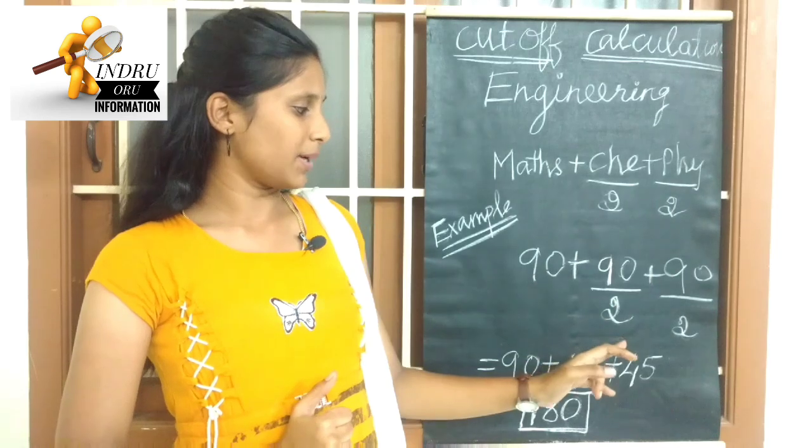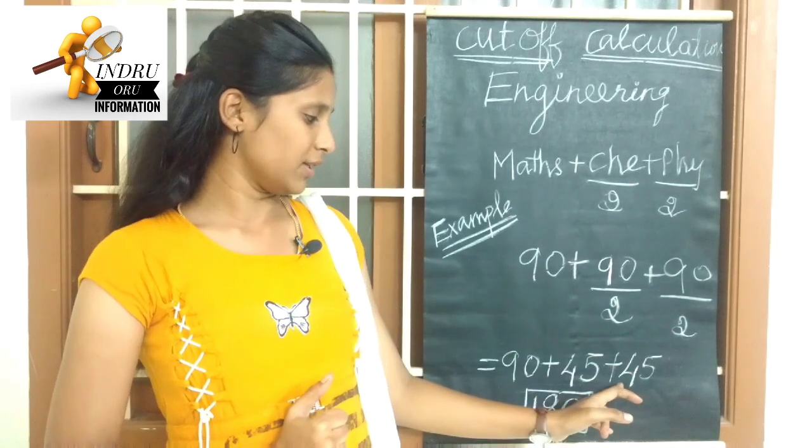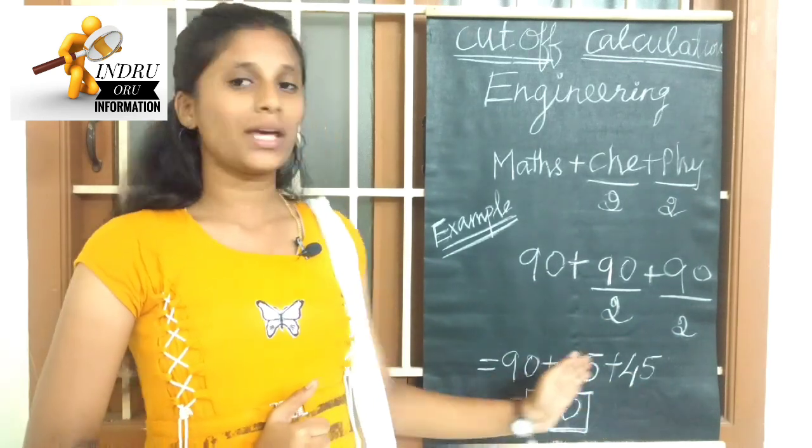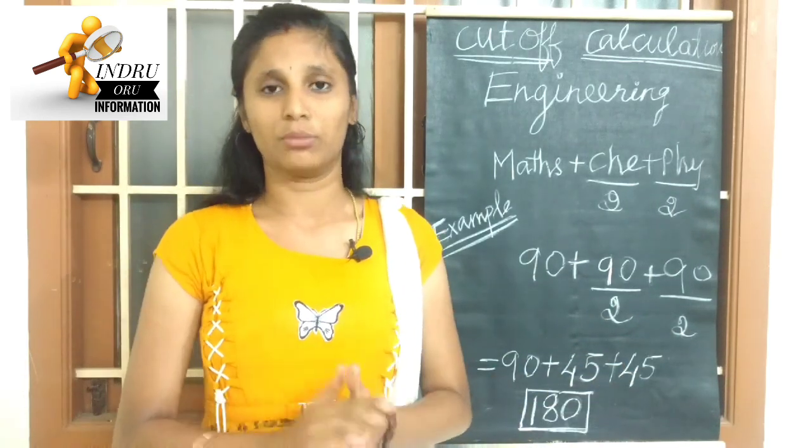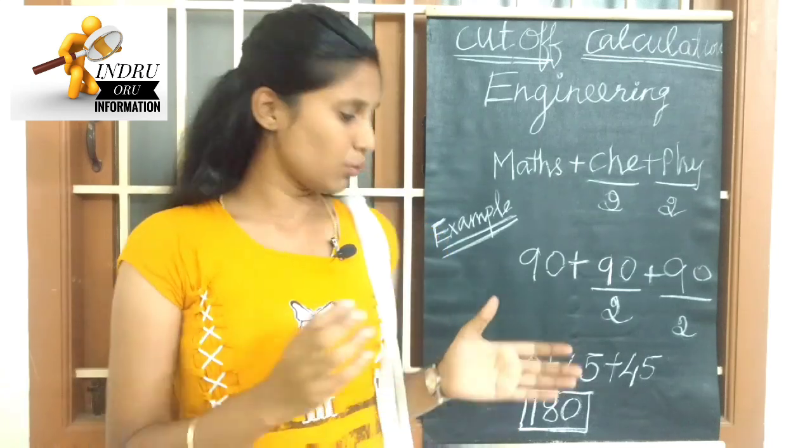Now, if you calculate the marks like this, there is 45. If you calculate the marks for Physics like this, you will get 180. You will calculate the cut-off from 200 to 180.